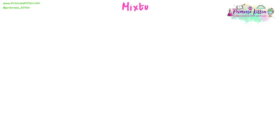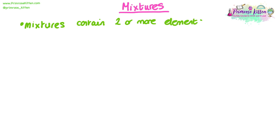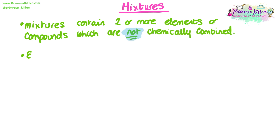Now that we've covered elements and compounds, let's get into mixtures. Mixtures are substances that contain two or more elements or compounds that have been mixed together. They are not chemically combined — they have not undergone a chemical reaction and are simply mixed together. A key difference between mixtures and compounds is that in a mixture, each of the elements or compounds added keep their own properties; they do not change properties like compounds do.